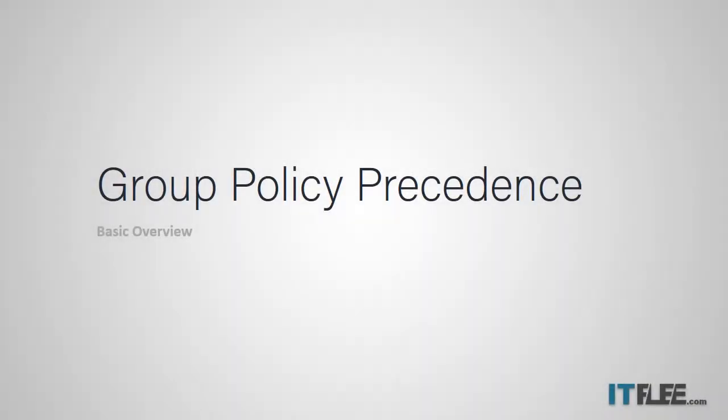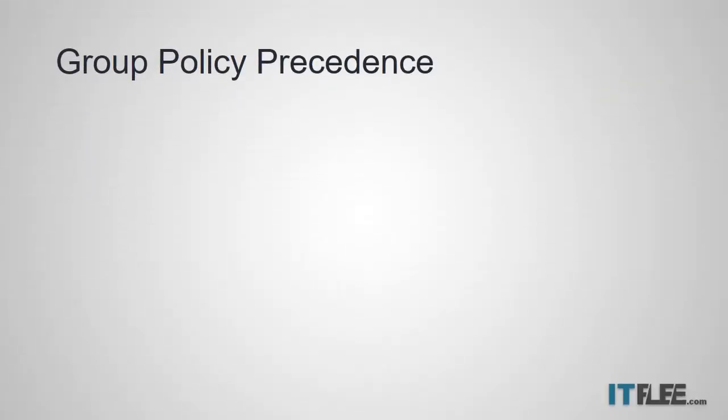Hey, it's Paul Hill from mytflea.com, and in this lesson I'm going to be explaining group policy precedence. Precedence means the order or the way that things are done, and with group policy there is a specific order in which group policy objects or GPO settings are applied. It's important to understand this because from time to time you'll have multiple GPOs trying to configure the same setting, and you have to understand the precedence in order to understand which settings will be applied and which settings will be ignored.